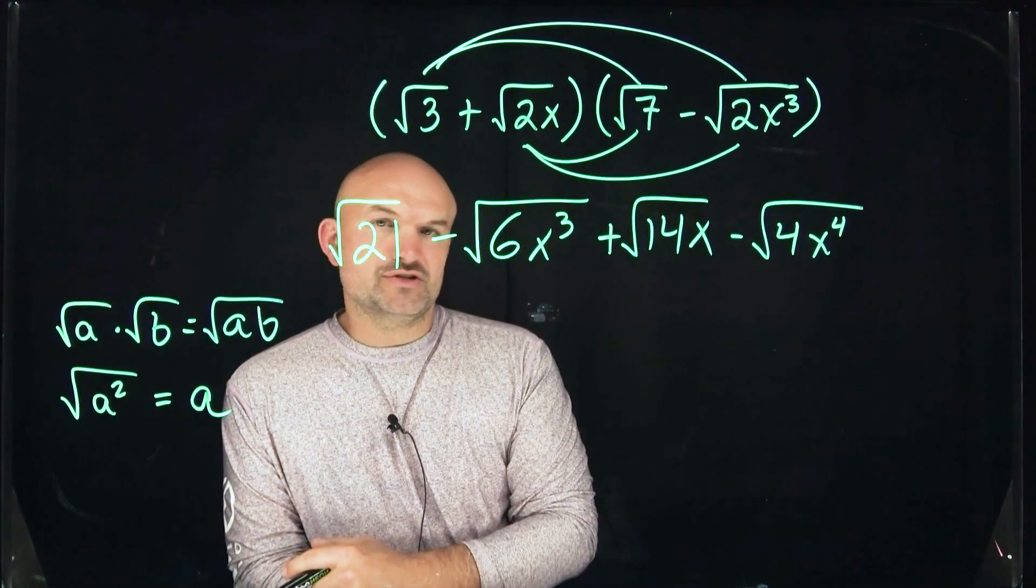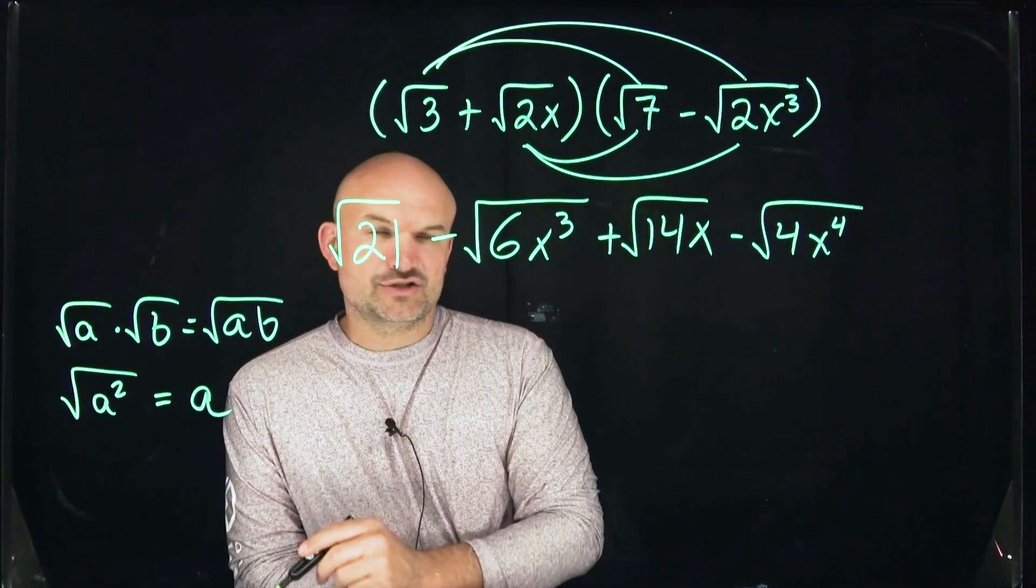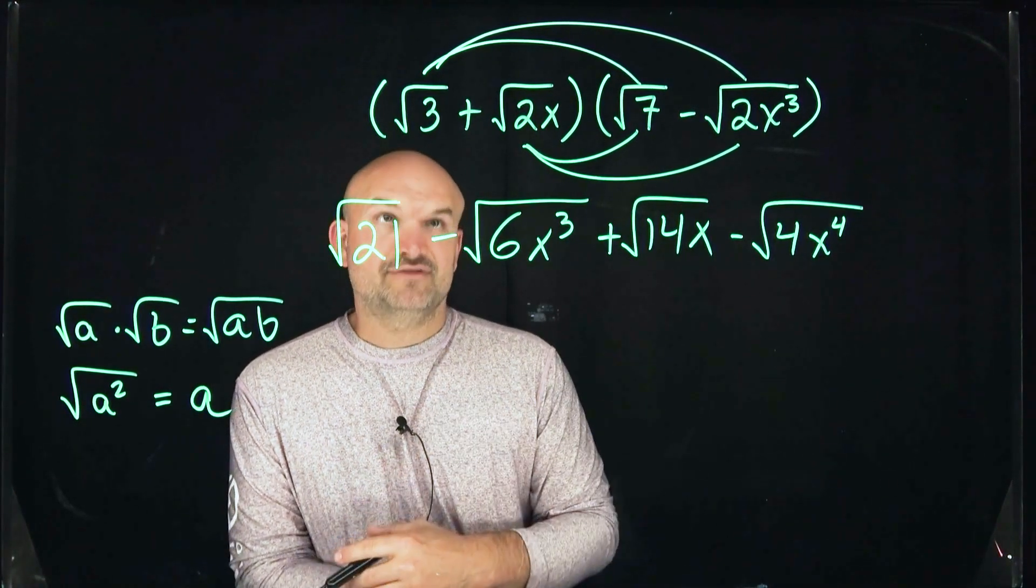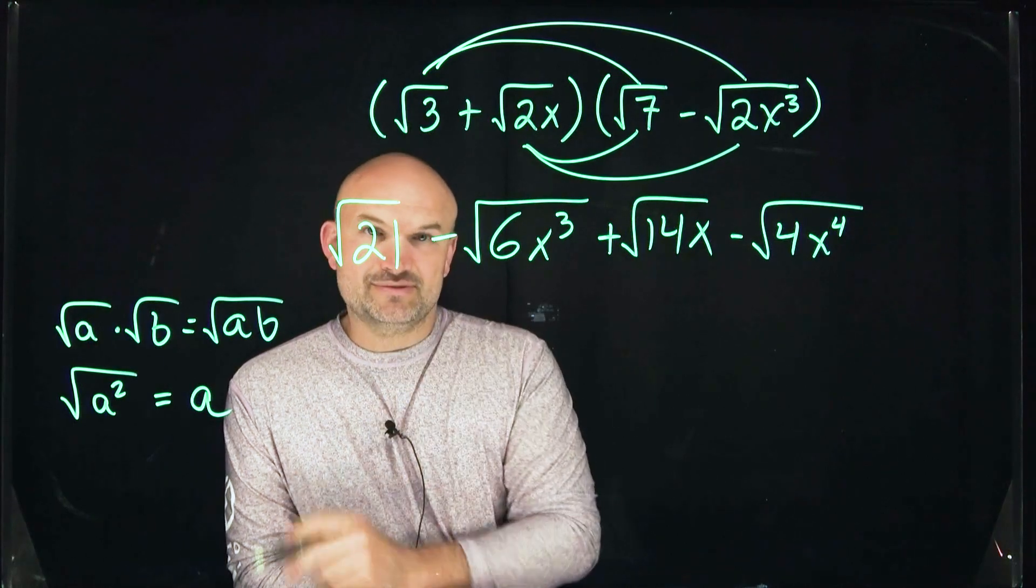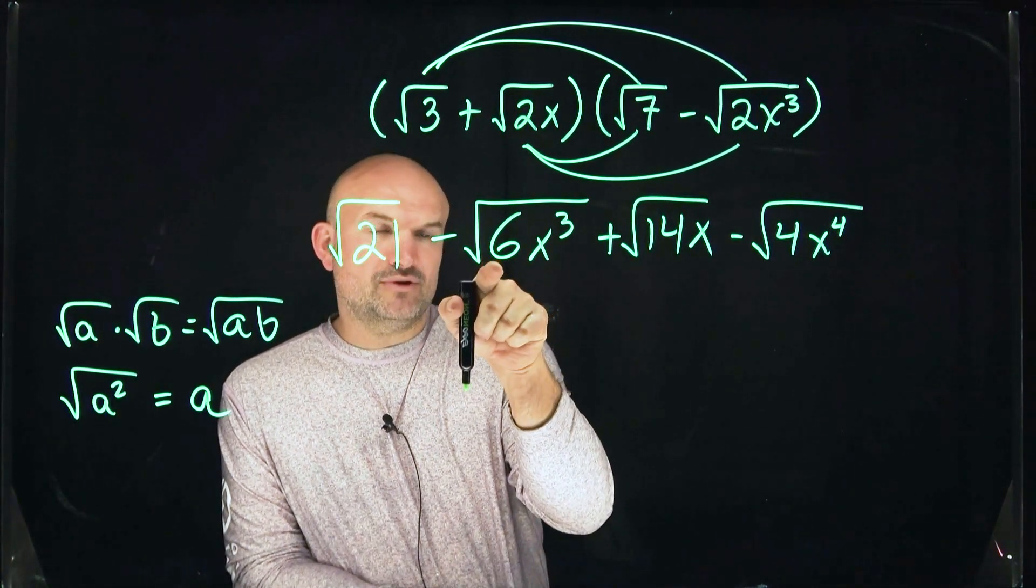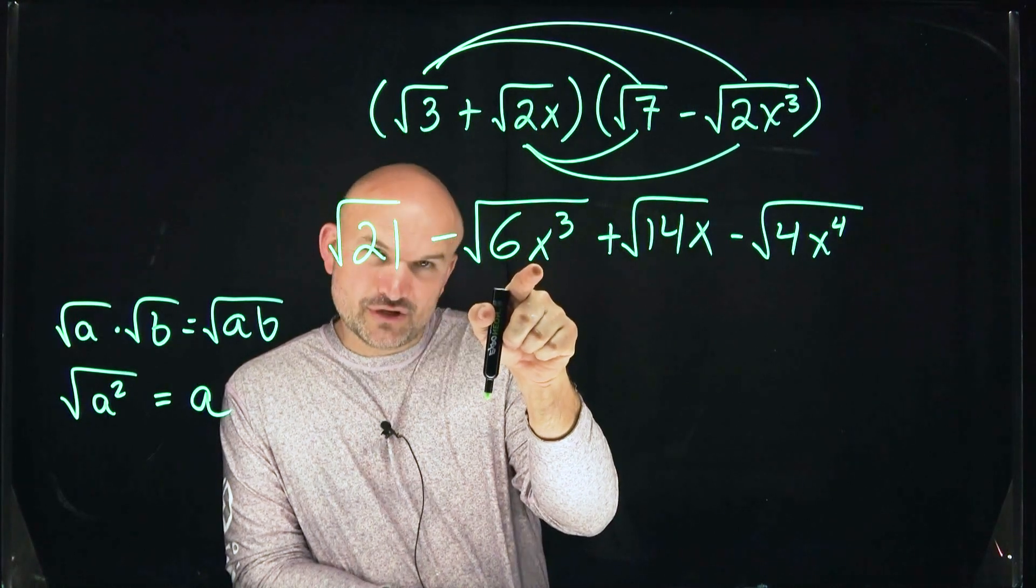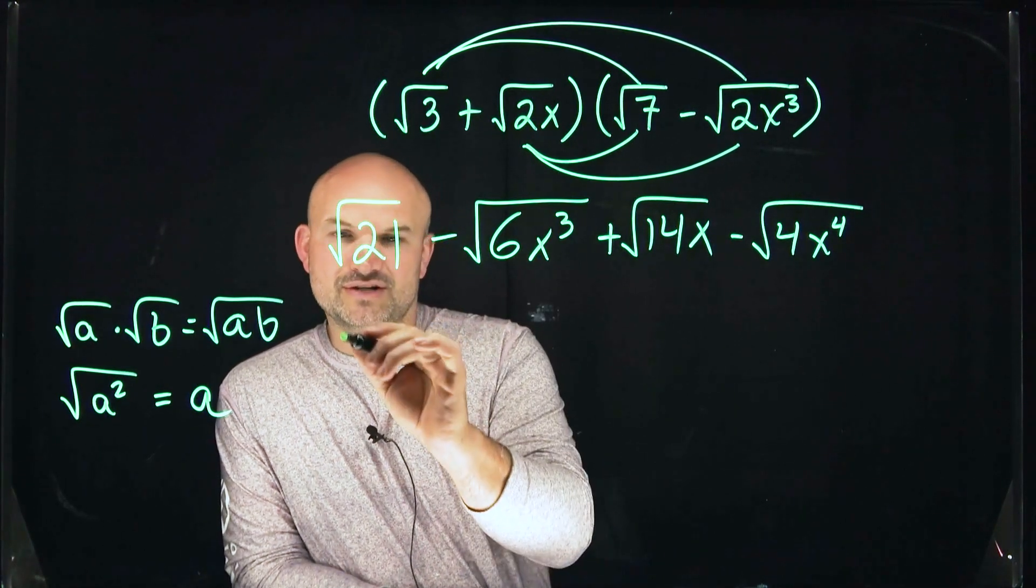So for 21, there's no square numbers that evenly divide into 21. I can't break that up any further. So therefore, that is going to be non-simplified. Over here, you might say, well, there's nothing I can do with a 6. But this is x cubed. It's not x squared. However, watch this.